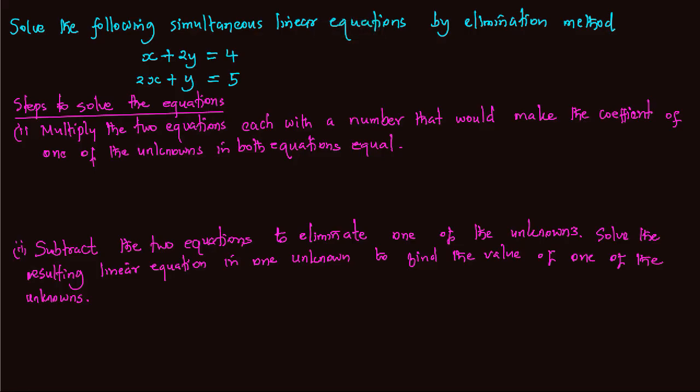Solve the following simultaneous linear equations by elimination method: x plus 2y is equal to 4, and 2x plus y is equal to 5.